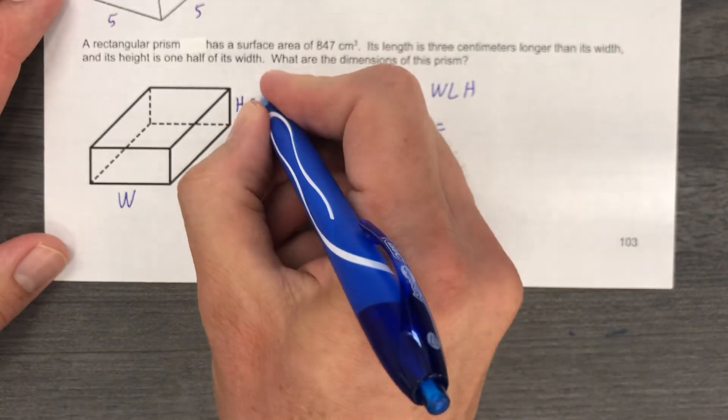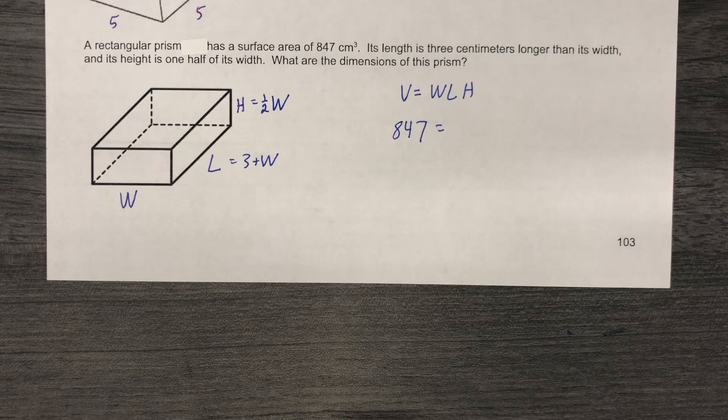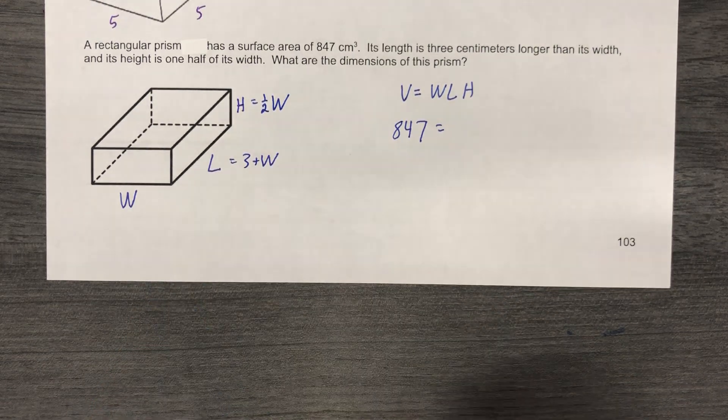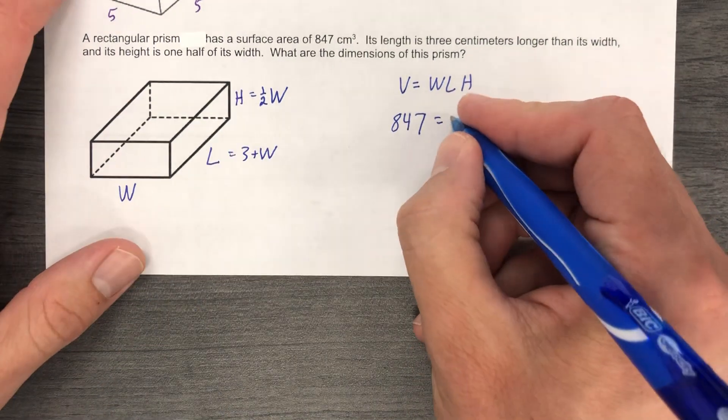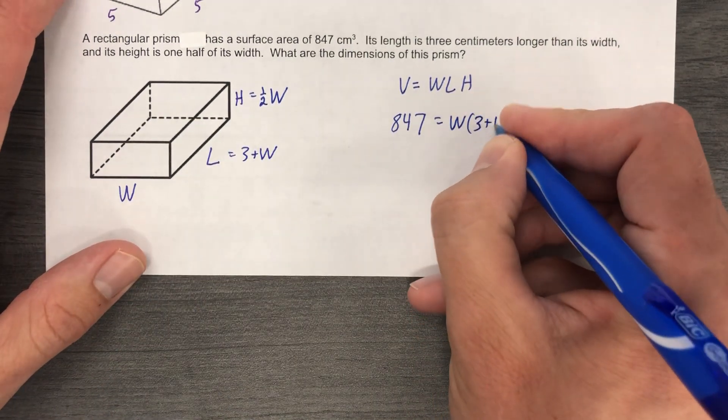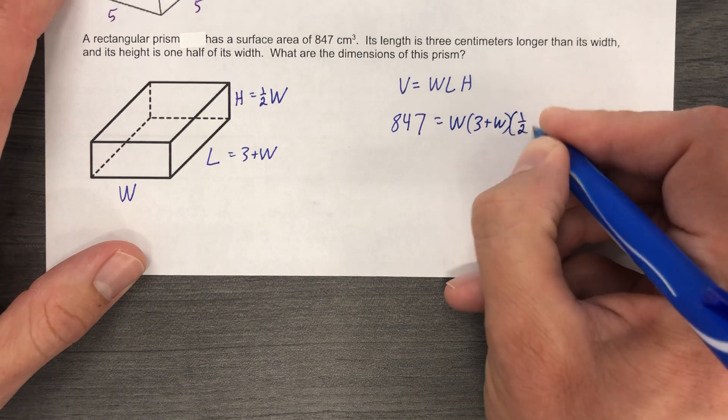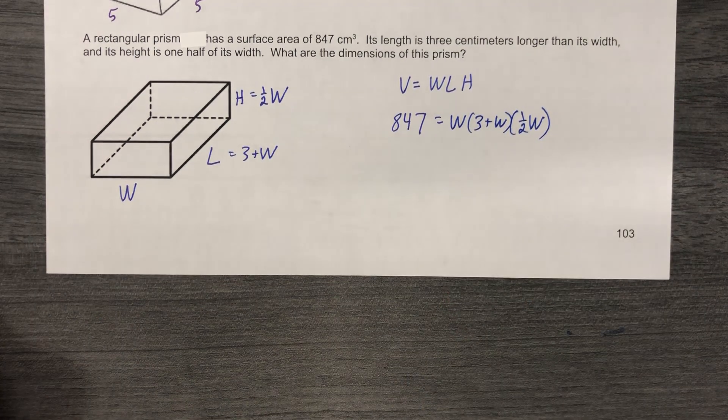And its height is one half of its width. Oh, stop right there. Everything here is in terms of W. So W, three plus W, one half W. Okay. So how are we going to solve it?